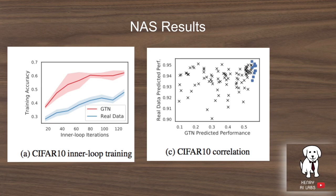The neural architecture search results show they get better results on CIFAR-10, and there is a correlation between predicted performance from training on the generative teaching network dataset and performance on the real data. Basically, networks that perform well on the generative teaching network dataset tend to perform well on the real data as well.